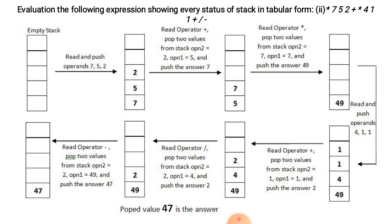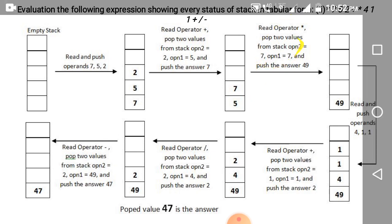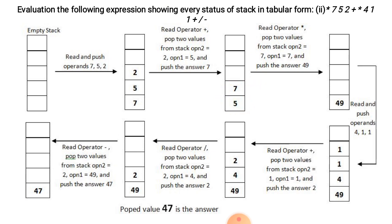Operand 1 is 5 and operand 2 is 2. The operator is plus so addition is performed: 5 plus 2 is 7. Next is multiplication — we read operator multiplication and pop two values: operand 2 is 7 and operand 1 is 5. Performing multiplication: 7 multiplied by 5 is equal to 49.